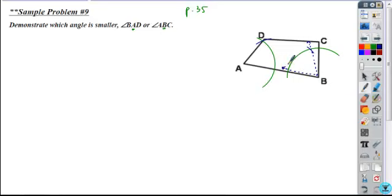So is angle A smaller than angle B? Yes. So if we look at that, here's our smaller one, angle BAD or angle A.